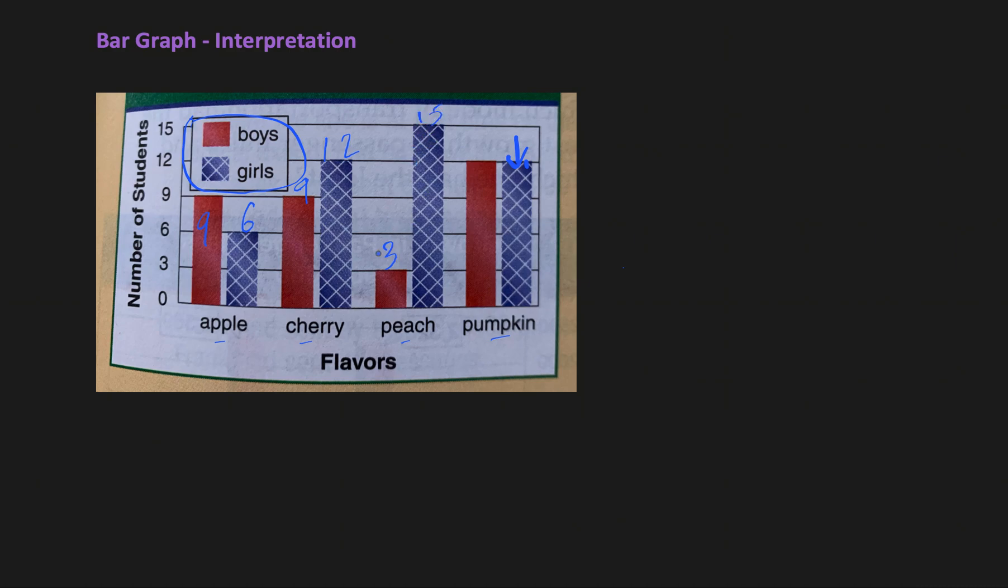I'm getting these numbers from the y-axis. Since this bar is of this length and this represents three on the y-axis, in this case 12 boys and 12 girls, both of them, equal number of boys and equal number of girls like pumpkin pies.